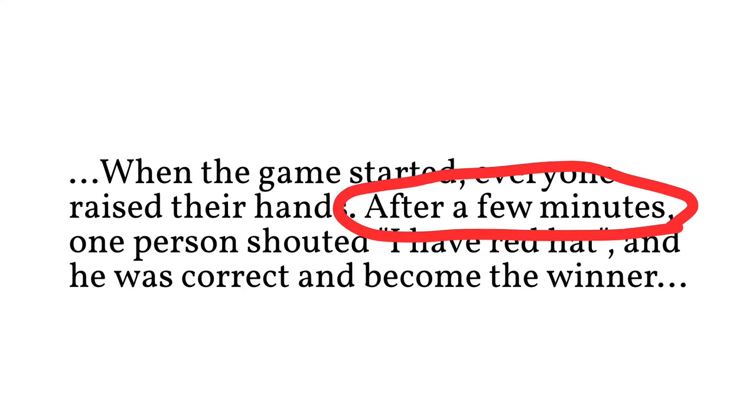Before we go into the solution, let me tell you two keys to this problem. The first one is we're going to be using a lot of process of elimination — there are three possible choices, and if choice one would lead to something we didn't see happen, we conclude it's impossible. Same for choice two. Once both are eliminated, choice three must be the answer. The second key is the part that says 'after a few minutes' — that literally means once the game starts, nobody knows the answer right away. That's a small but important piece of information.